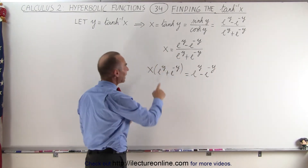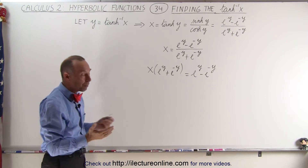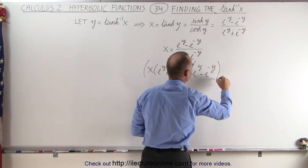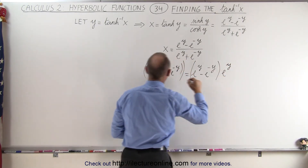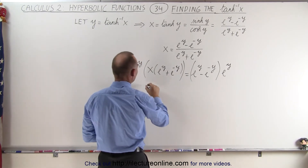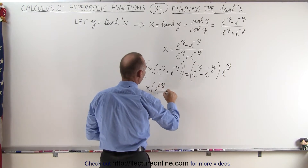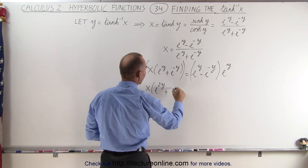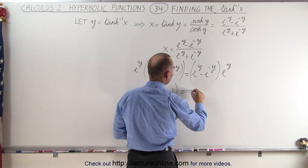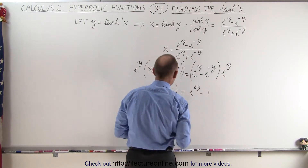Since we have both e to the y and e to the negative y, we can simplify by multiplying both sides of the equation by e to the y. On the left side we end up with x times e to the 2y plus 1, since e to the y times e to the negative y equals 1. On the right side we get e to the 2y minus 1.